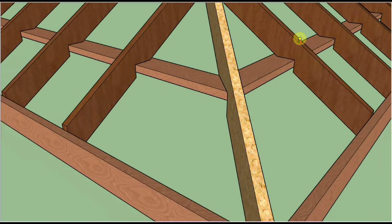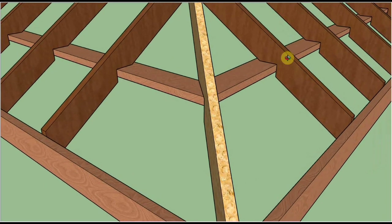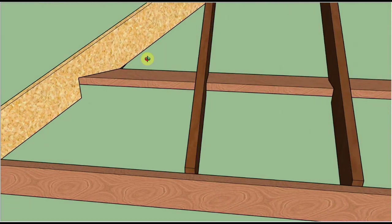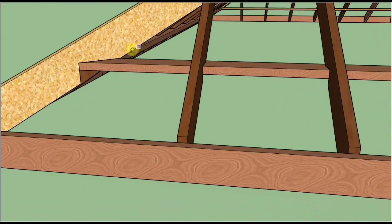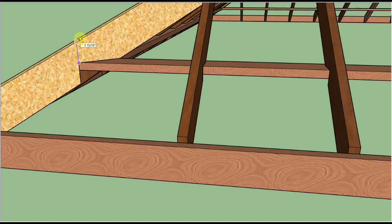We use that same dimension, 3 and 15/16, and we lay out the position of the seat cut on the hip rafter. So there's 3 and 15/16 of wood above the plate in both cases.